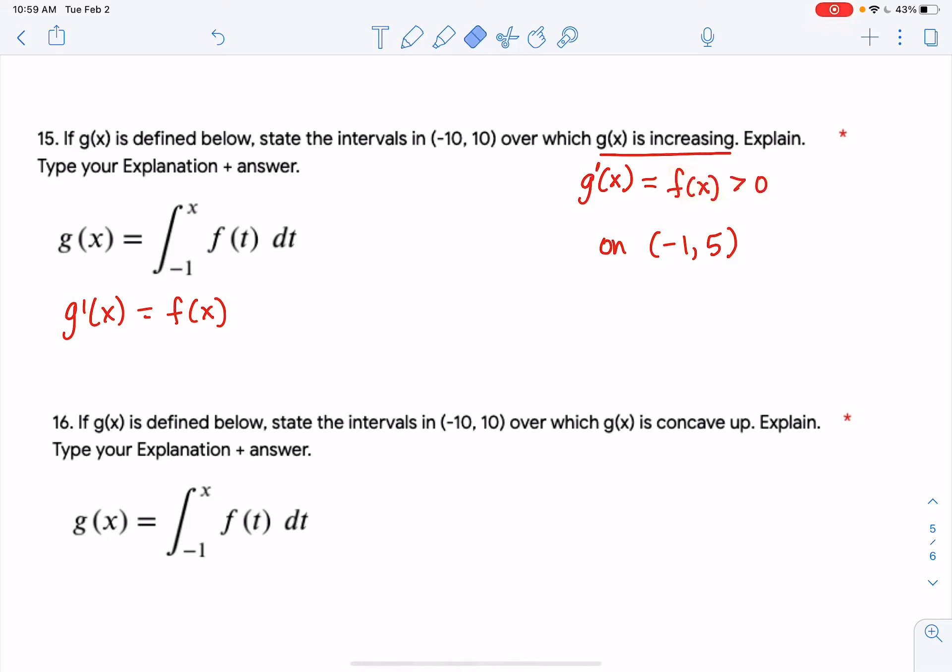Let's move on to 16. 16 says, where is g concave up? So g is concave up where g double prime of x,